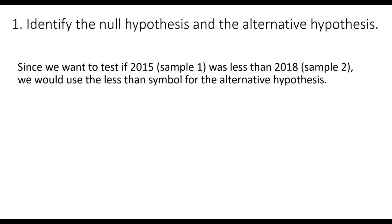Identifying the null and alternative hypothesis. Since we want to test if 2015, sample 1, was less than 2018, sample 2, we would use the less than symbol for the alternative hypothesis. Because remember, the null hypothesis is always equality. So here we're going to say the mean of the first sample, mu sub 1, equals the mean of the second sample, mu sub 2. So the null hypothesis always has the equal sign.